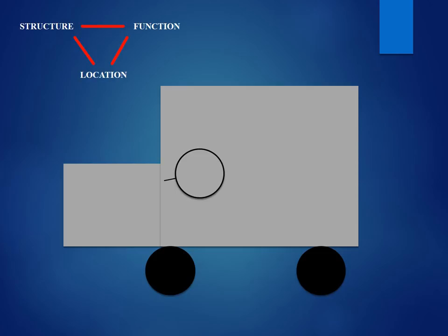We also have wheels, indicated by the black circles. Those are going to have a similar structure — they're going to be circular, similar to the steering wheel — but they serve a completely different function. The function is to turn and spin, and that spin grips the road and pulls or pushes the car forward. The location of the wheels or tires needs to be underneath the car so that they can come in contact with the road and spin as the axle spins.